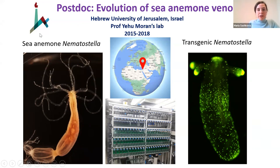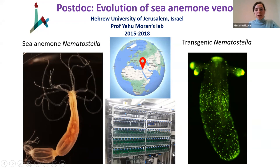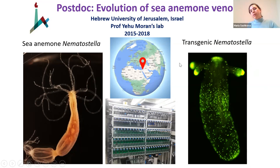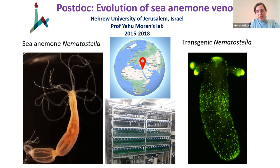Nematostella is a really great venomous organism because, unlike many other organisms, it's a quite well-established lab model. You can culture these animals in the lab and they will be available throughout the year. You can do a lot of advanced molecular biology methods in it — for example, you can make transgenic animals, which allows you to monitor the dynamics of toxin production in different conditions in great detail.